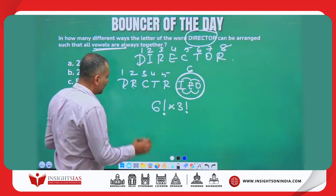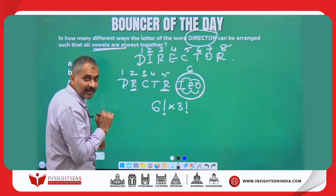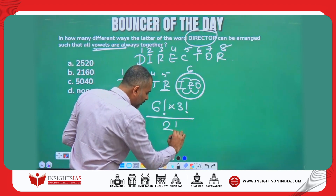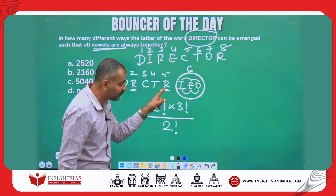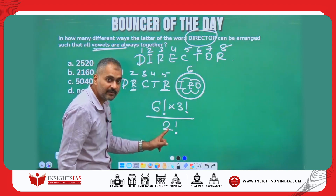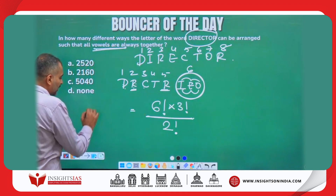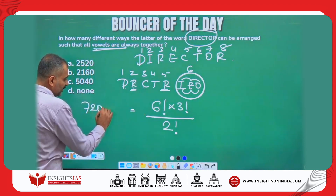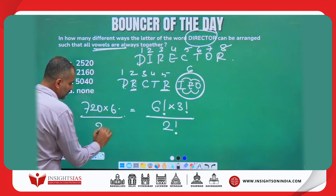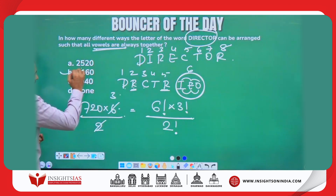But remember, there are two characters which are repeated. If they are repeated, to avoid repetition of counting, divide by the number of times they are repeated. R is repeated two times, hence divide by 2 factorial. So this is your answer, which is 6 factorial = 720, multiplied by 3 factorial divided by 2 factorial, giving 3 — which is 2160.